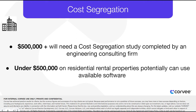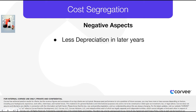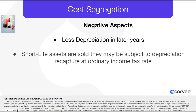The cost segregation study will not increase the overall depreciation that can be taken on the building — just accelerate depreciation in the first years of ownership. This means that depreciation in later years will be less. When short-life assets found in a cost segregation study are sold, they may be subject to depreciation recapture at the taxpayer's ordinary income tax rate instead of the capital gains tax rate.